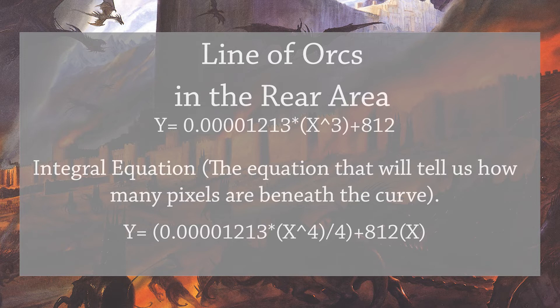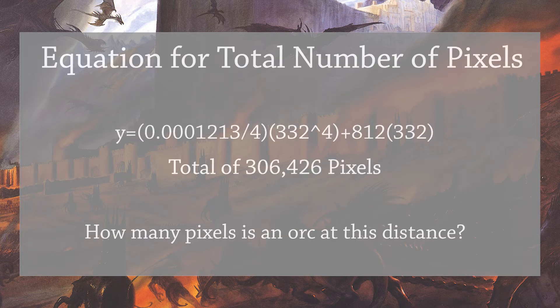This is the integral equation; this is correct, and this is what we can use to solve for the number of pixels. From here it's actually pretty simple — all we need to do is plug in the x-coordinates into this equation and subtract the results from each other, and that difference will tell us the number of orcs. Plugging in zero gives us zero since anything times zero is zero. Plugging in 332, the numbers get really big and then much smaller, and after doing all the math we get a final number of 306,426 pixels beneath that curve.